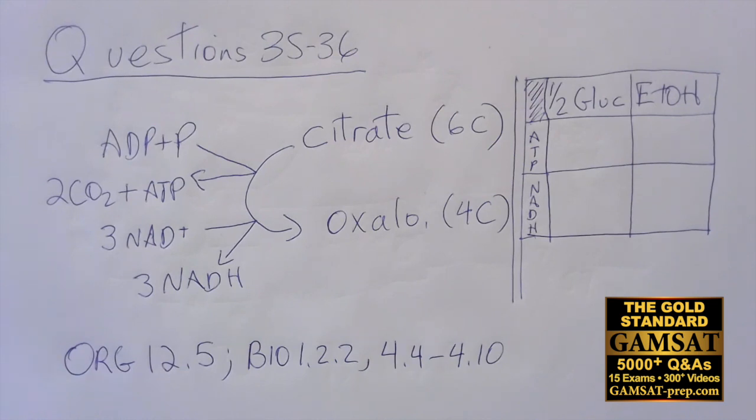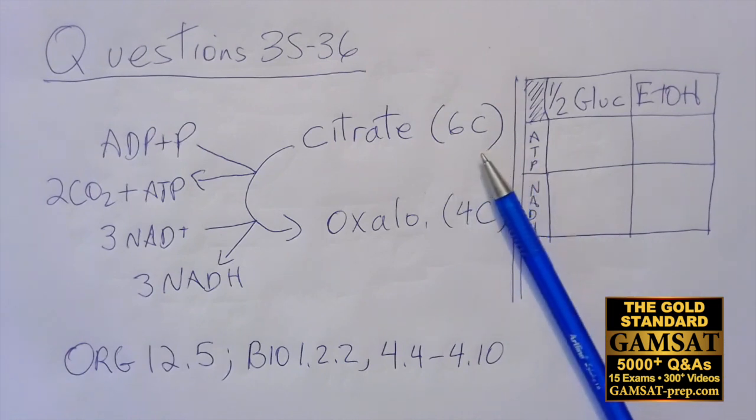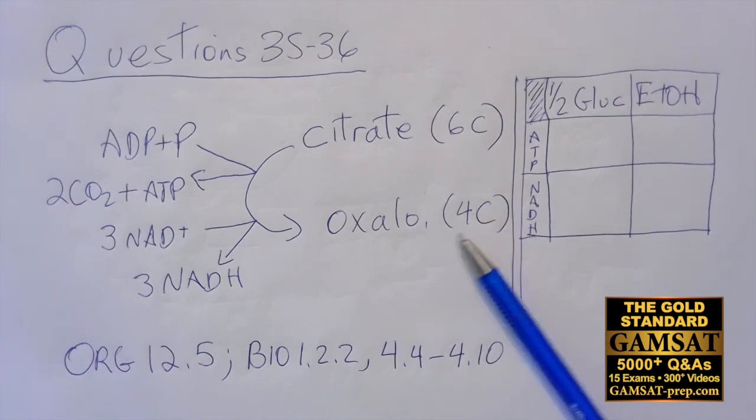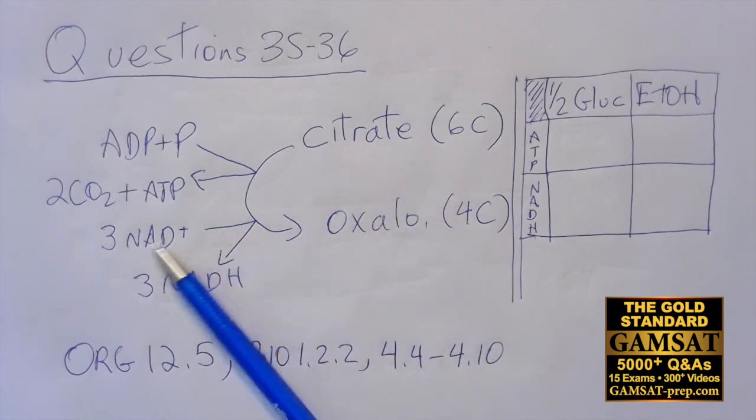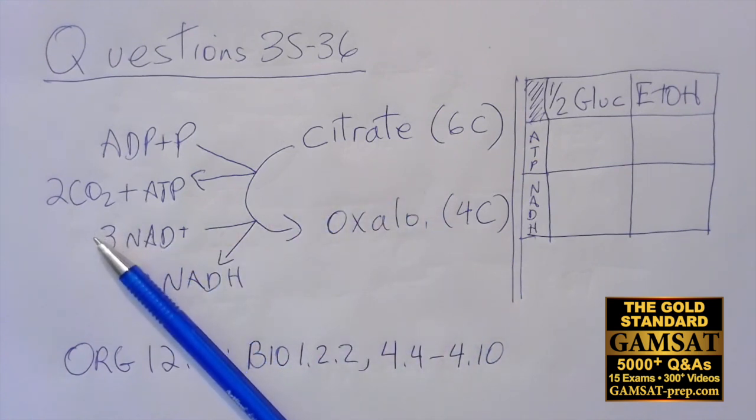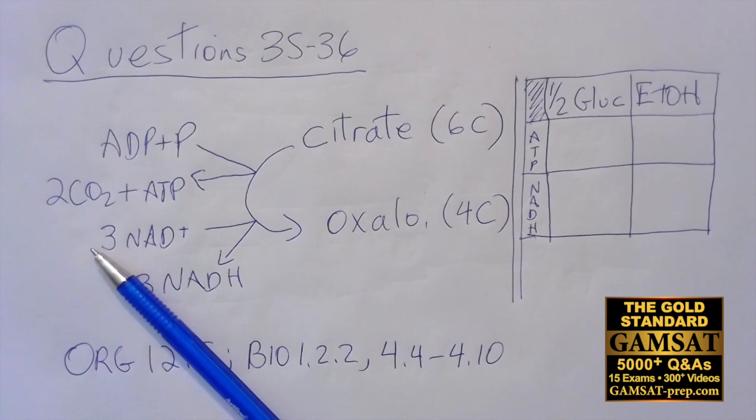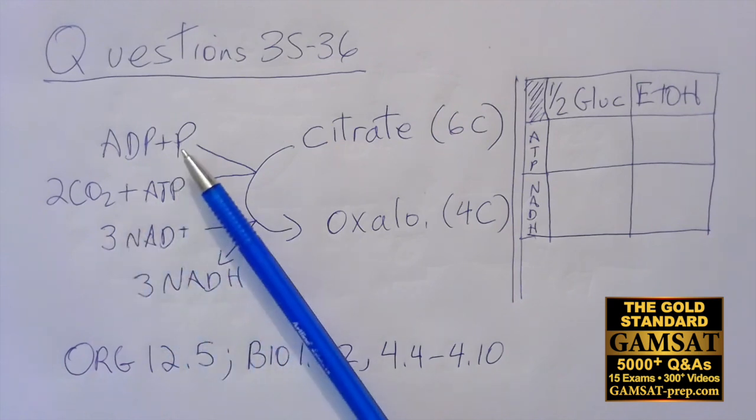Count the carbons on citrate and count the carbons on oxaloacetate, and you'll see we have a six carbon compound citrate and a four carbon compound oxaloacetate. Two carbons have left the cycle and that's the two CO2. This also underlines the fact that there's no carbons being dealt with between ADP and ATP.